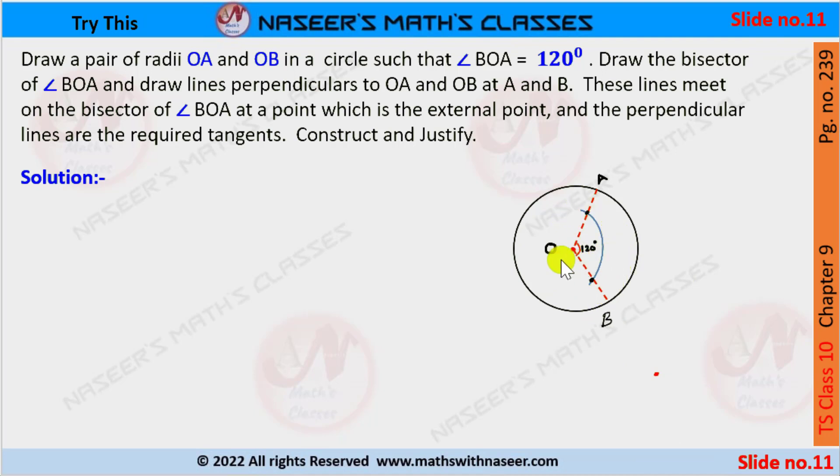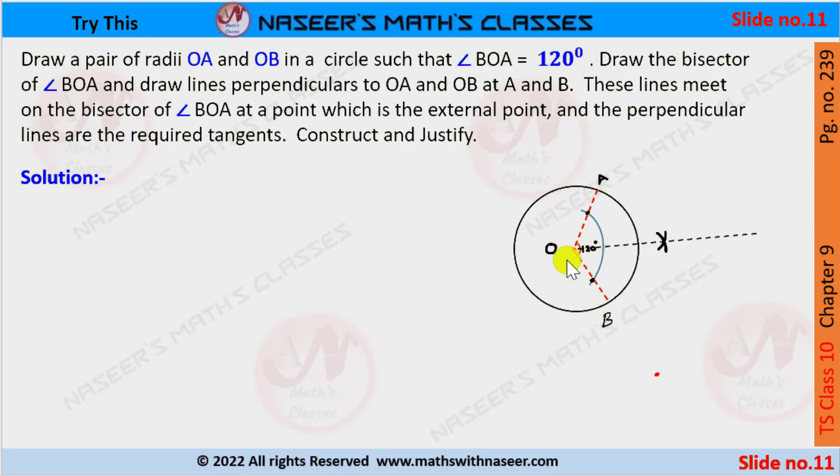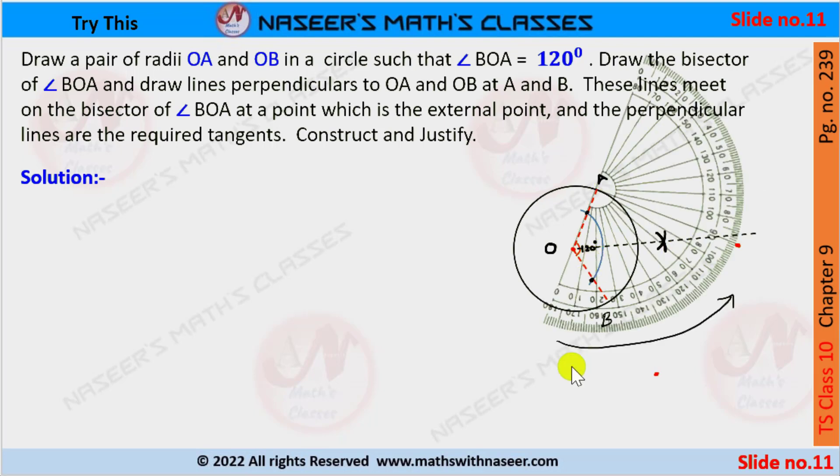The arc intersects radii OA and OB at two points. From these two points, draw two arcs to obtain the angular bisector of 120 degrees. Now draw a line through O along the angular bisector.